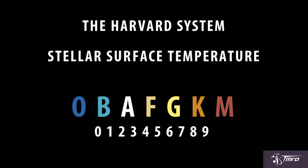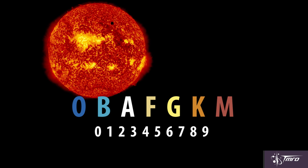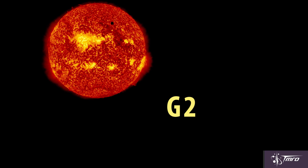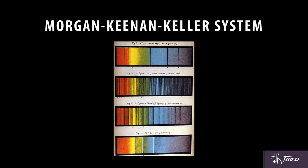Each individual letter is then subdivided into numerals, with zero being the hottest surface temperature of that letter designation and nine being the coolest. Using this scale, our sun is a G2 star.